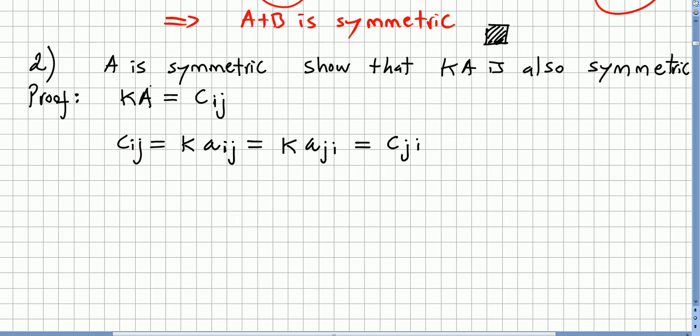So if A is symmetric, kA is also symmetric, because c_ij is equal to c_ji. Writing ka_ij and ka_ji, you got c_ij and c_ji, and that concludes the proof.